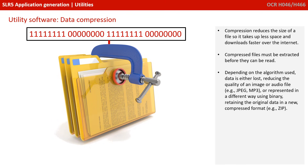Depending on the algorithm used, data is either lost during compression, which reduces the quality of an image or sound — for example, JPEG — or all the data is represented in a different way using binary, retaining the original data in a new compressed format, for example with a zip file.